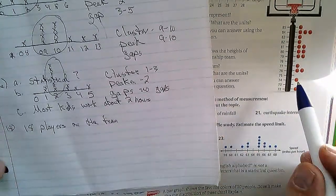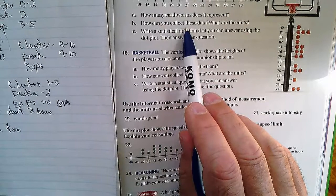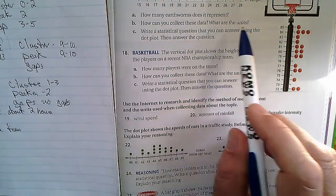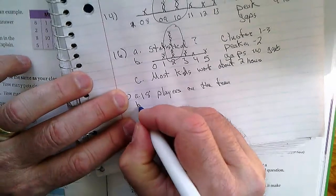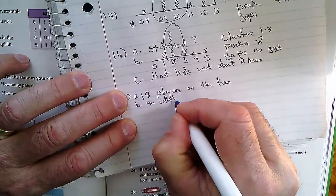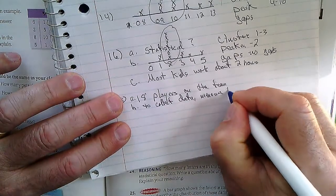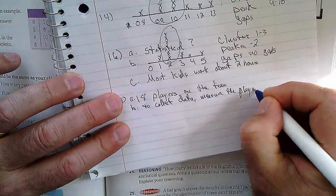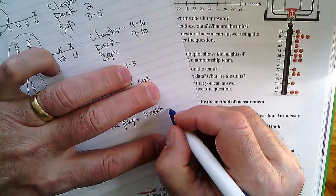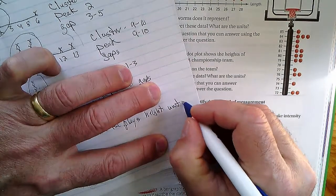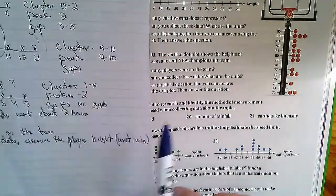Part B: how can you collect these data? What are the units? To collect data, all you have to do is measure the players' height, and the units are inches. Sorry about that, I'm writing in the margin - I don't like to do that but I want to use a whole other line.